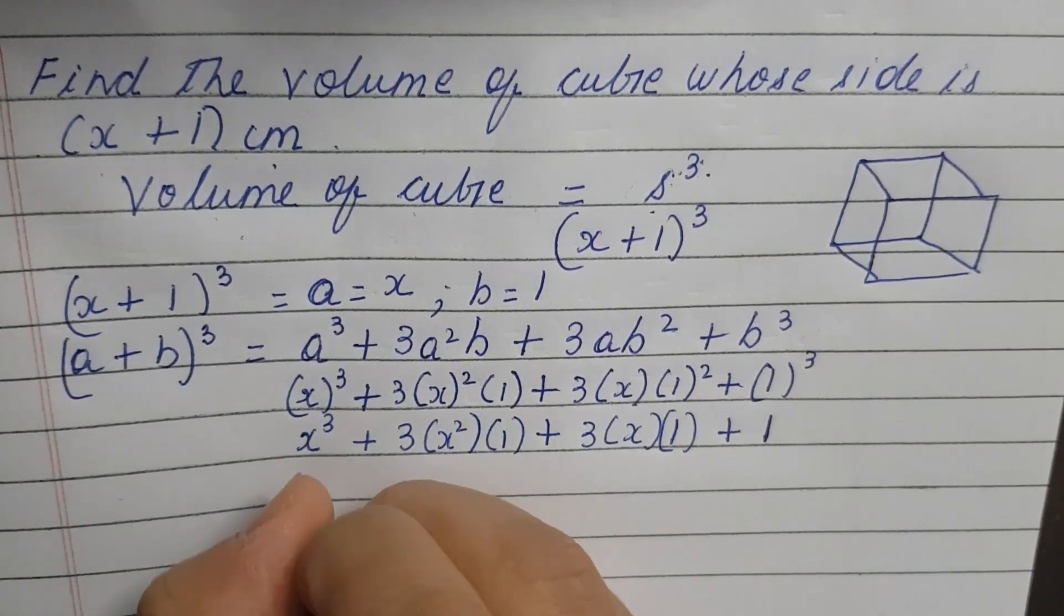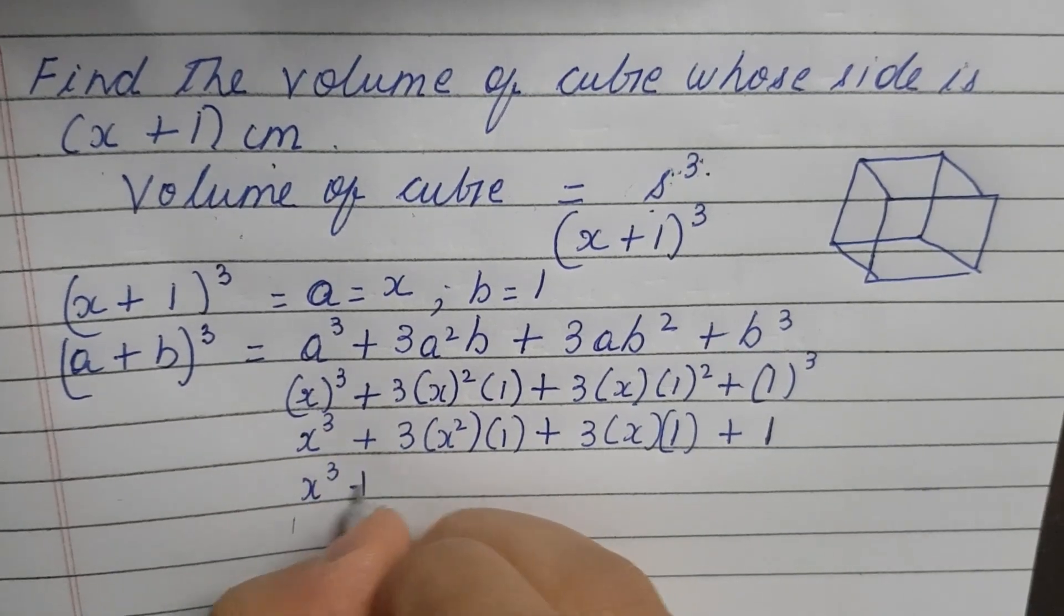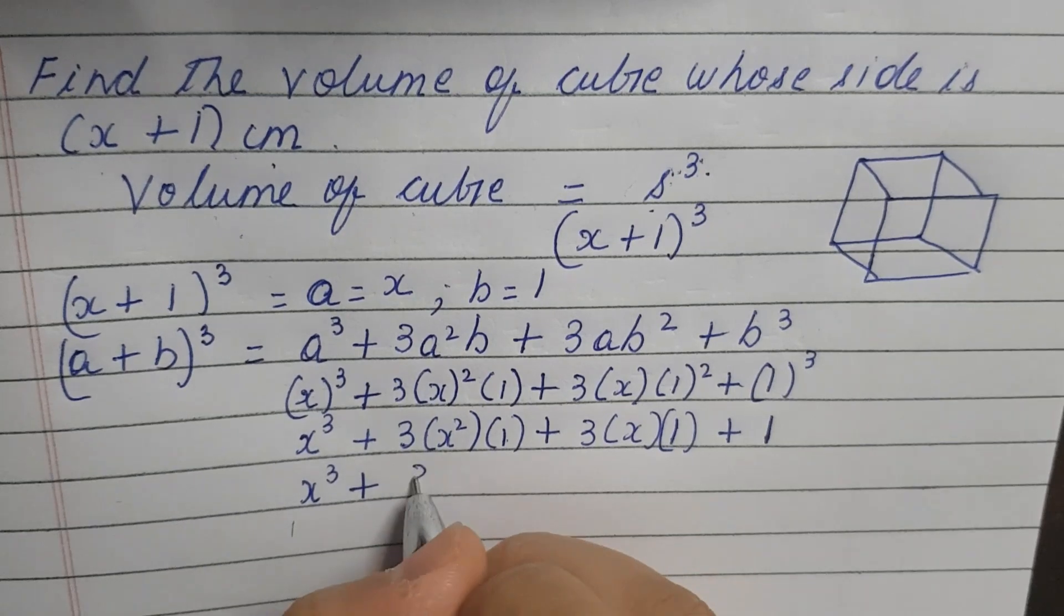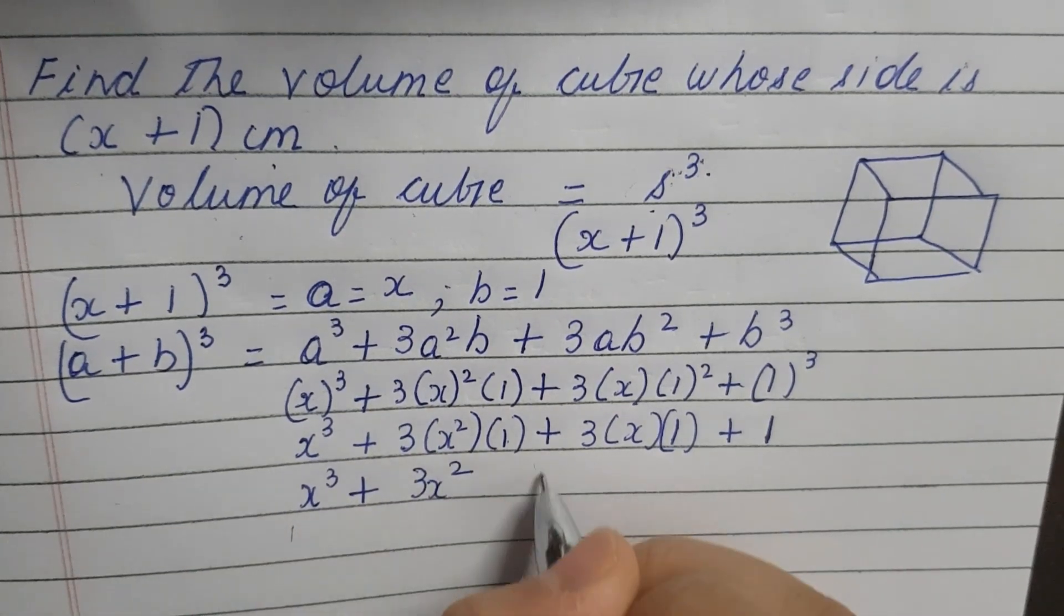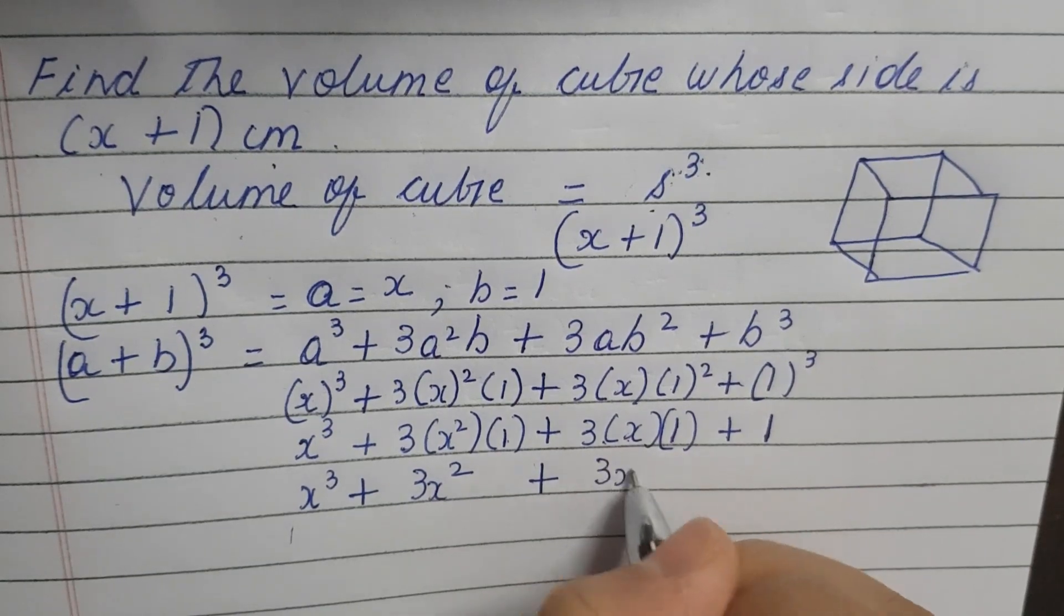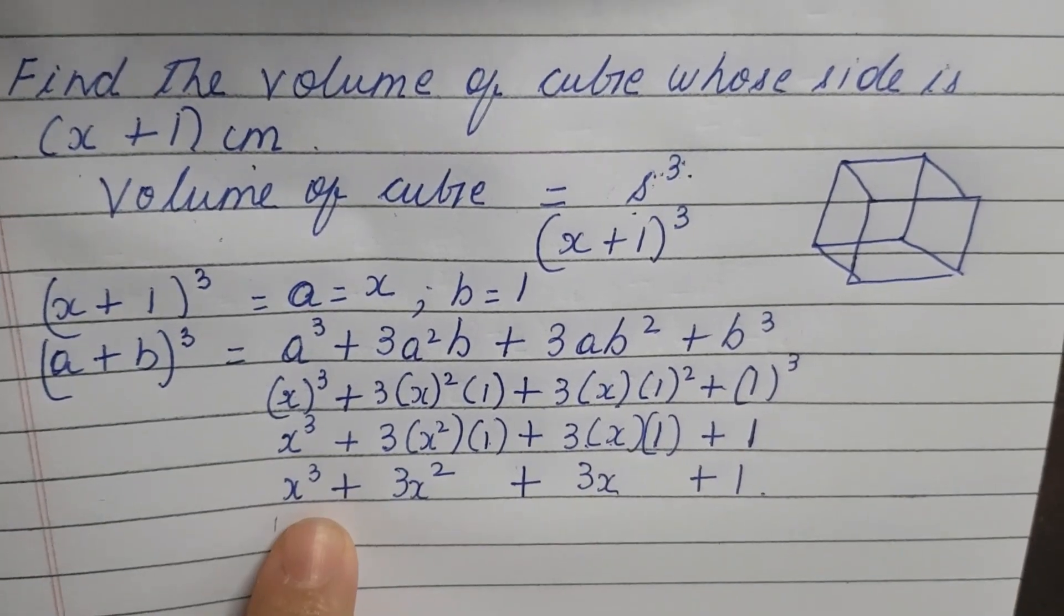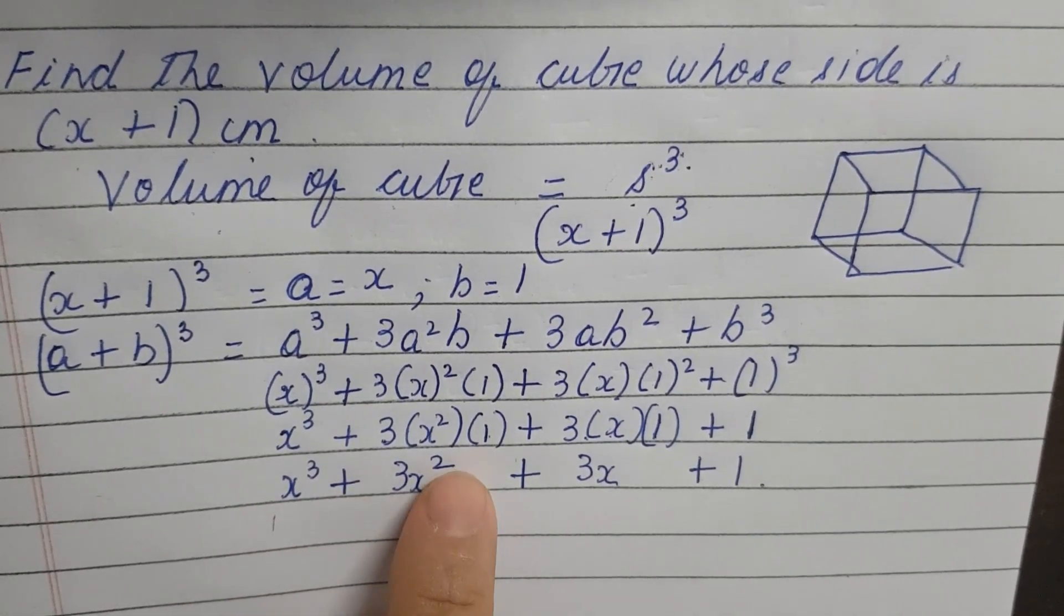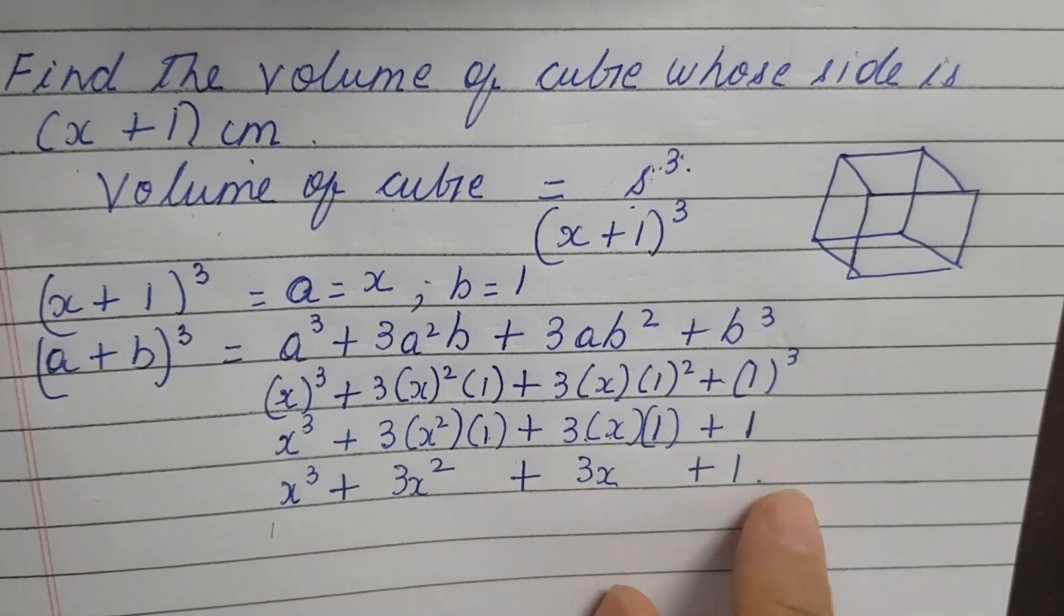So x to the power 3 plus 3 into 1 is 3, 3 into x to the power 2 is 3x², plus 3 into 1 is 3, 3 into x is 3x plus 1. So the answer is x³ plus 3x² plus 3x plus 1.